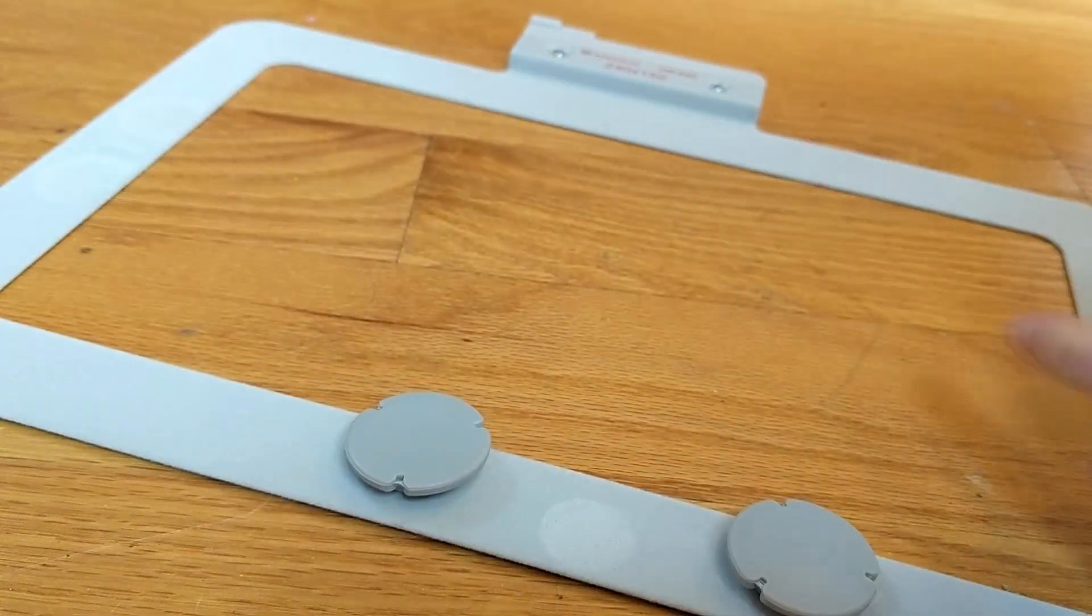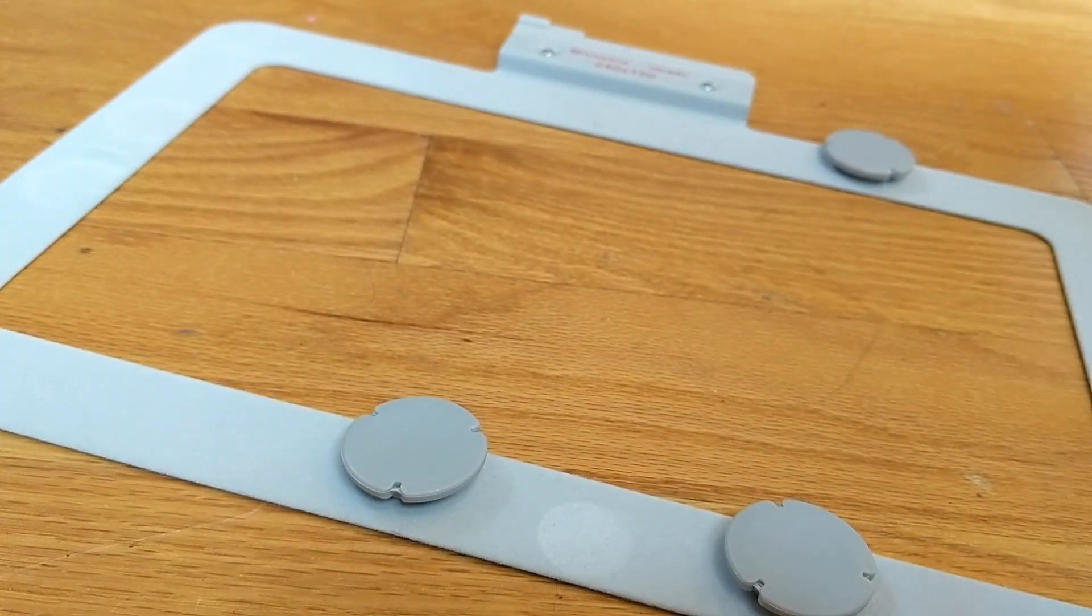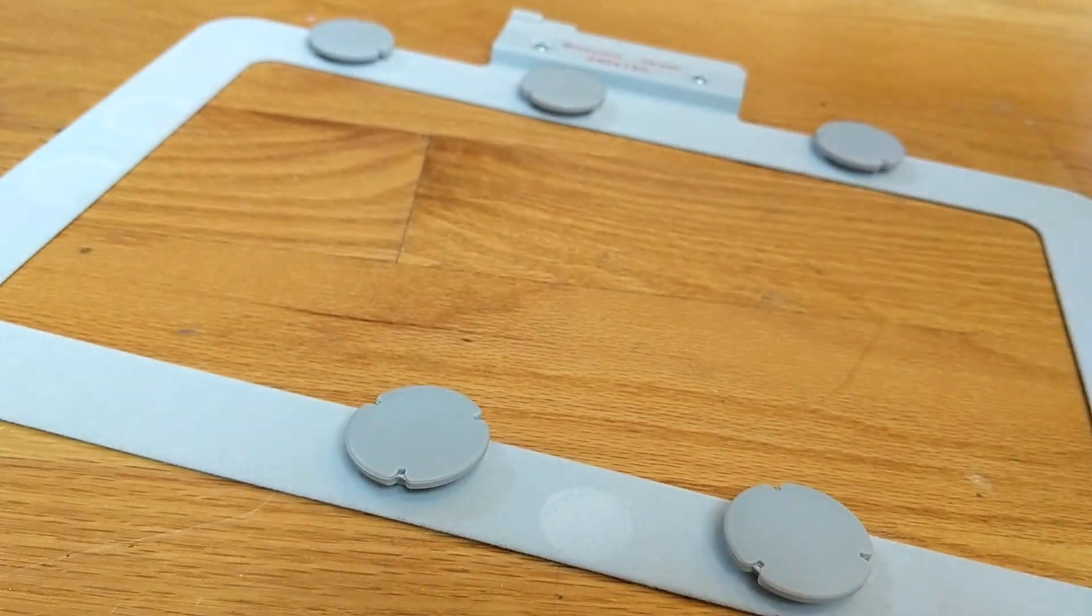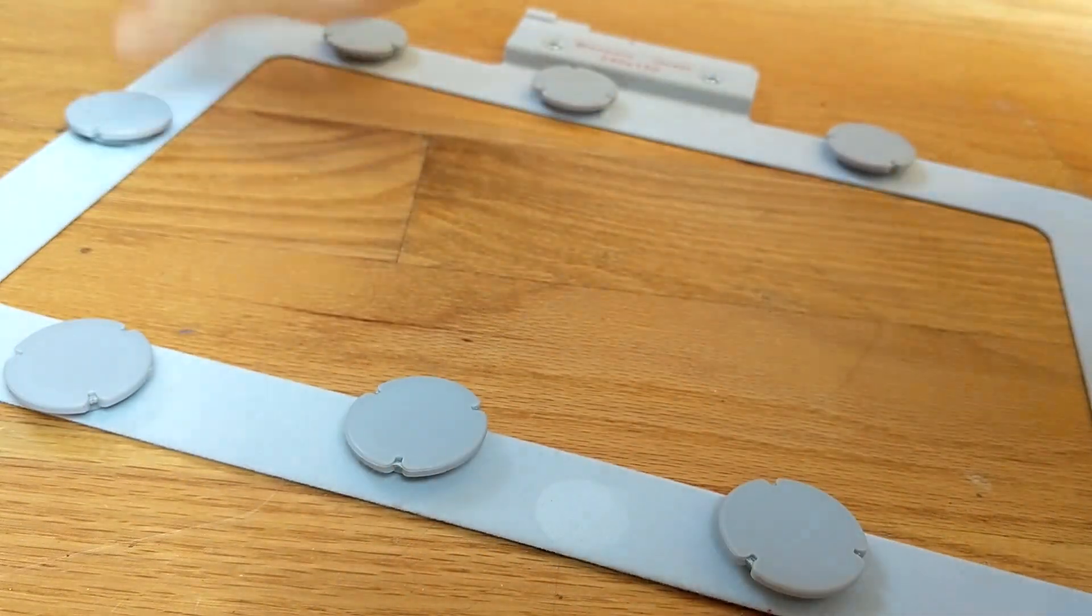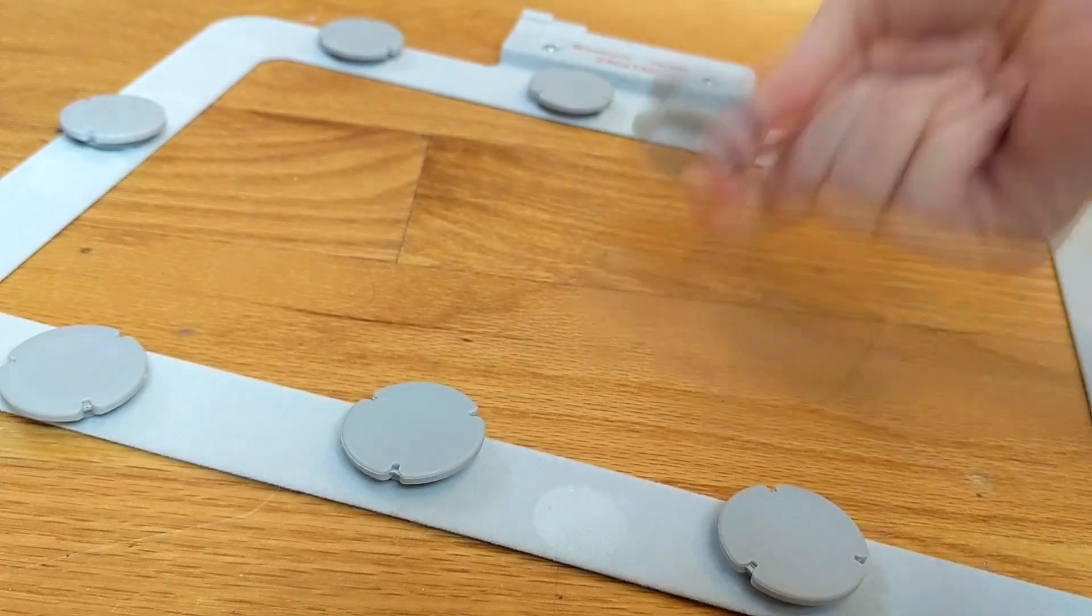The hoop came with a set of four, but we purchased an additional four because we thought it would improve the fabric tension on this size of a hoop, and I'm really glad we did. The more magnets you have, the more tension is distributed.